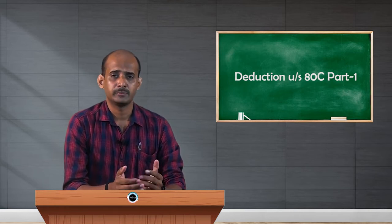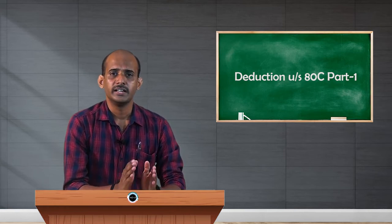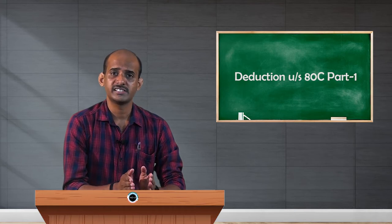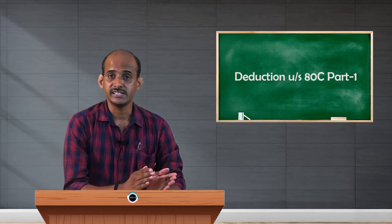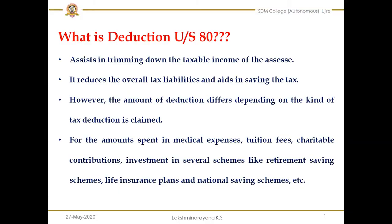The income tax department has offered various deductions starting from Section 80C to 80U. This includes 80C, 80CCC, 80CCD, 80D, 80G, 80TTA, 80U, and others. Various sections are available under which you can claim deductions for the investments you have made or the amount you have spent from the income you have earned.